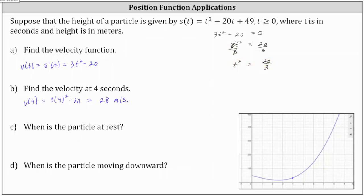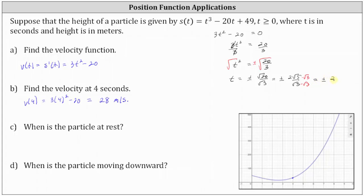Now we take the square root of both sides to solve for t. Algebraically, we'll have a positive and negative value of t, even though t is only valid when t is non-negative. Simplifying, we have t equals plus or minus the square root of 20 thirds, which equals the square root of 20 divided by the square root of three. Since 20 equals four times five and the square root of four is two, this gives us plus or minus two square root five divided by square root three. Rationalizing the denominator gives plus or minus two square root 15 divided by three. We only use the positive value, so t equals two square root 15 divided by three, which is approximately 2.58.